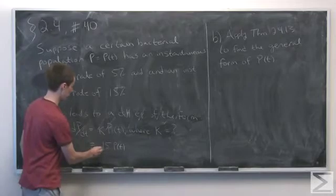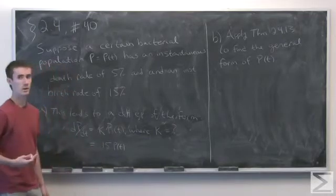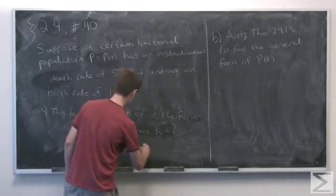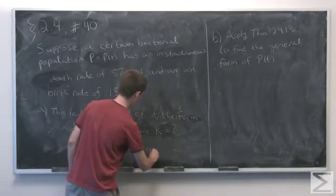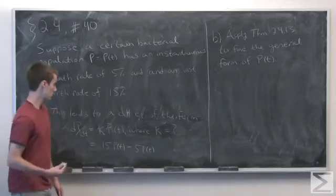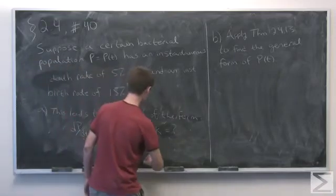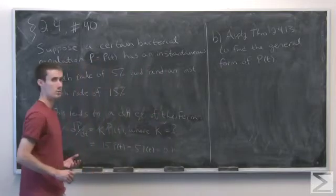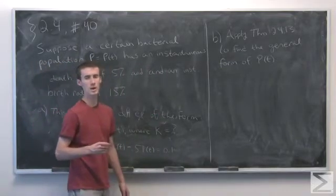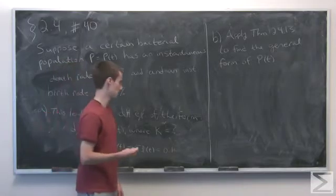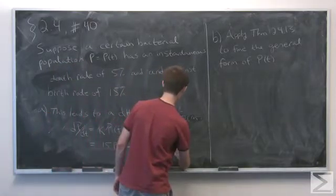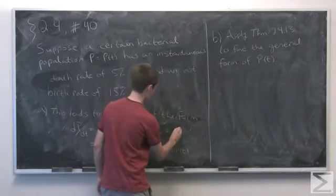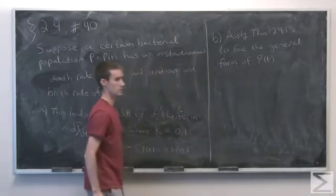And it's going to be decaying at a rate of 5%, so minus 0.5 p(t). Simplifying this, we see that the instantaneous rate of change of the population at time t equals 0.1 times p(t). So k equals 0.1.